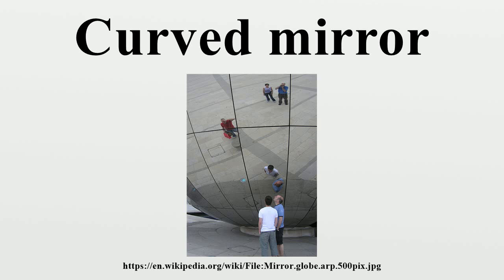For convex mirrors, if one moves the term to the right side of the equation to solve for it, the result is always a negative number, meaning that the image distance is negative — the image is virtual, located behind the mirror. This is consistent with the behavior described above. For concave mirrors, whether the image is virtual or real depends on how large the object's distance is compared to the focal length.